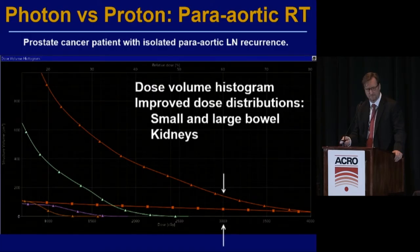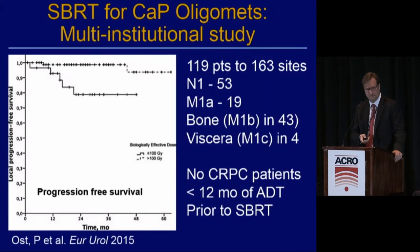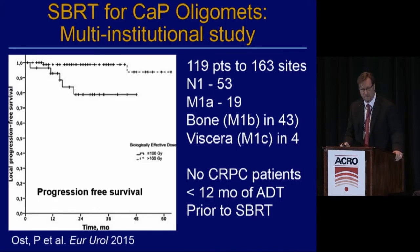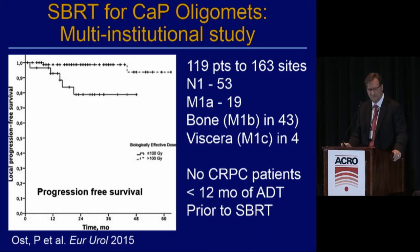An interesting consideration is photons versus protons for para-aortic radiation therapy. We can certainly reduce bowel dose using protons instead of photons in this setting, with improvement in dose-volume histograms, though this is not done routinely but is something for future consideration.